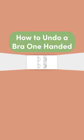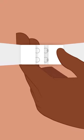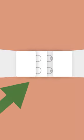To undo a bra one-handed, first feel for the clasp on the back of the bra, which will be in the center of the band and feel thicker than the rest of the fabric.